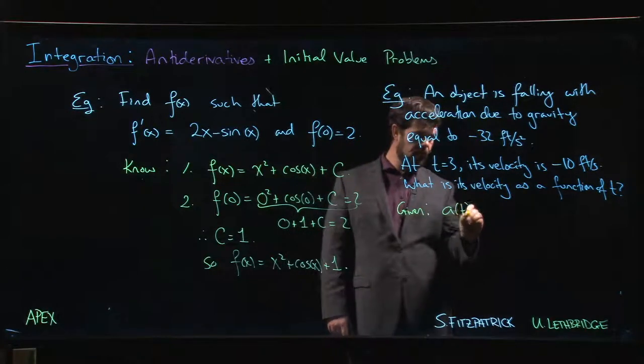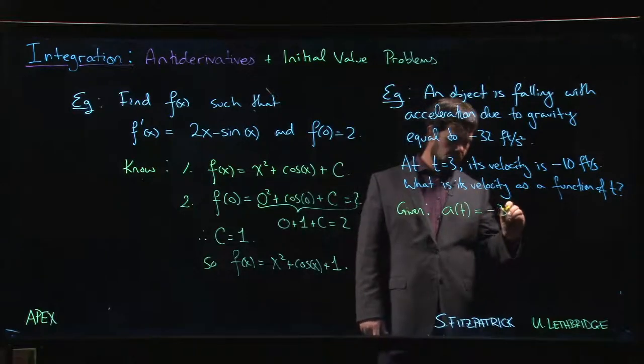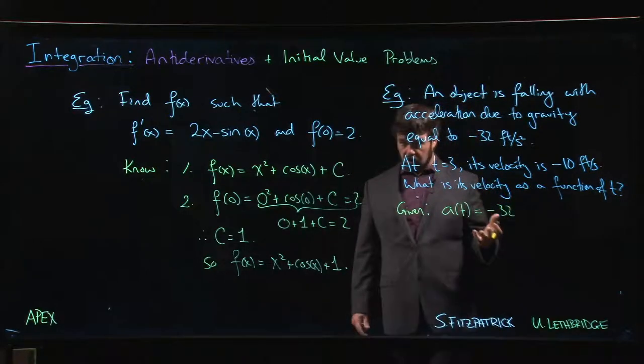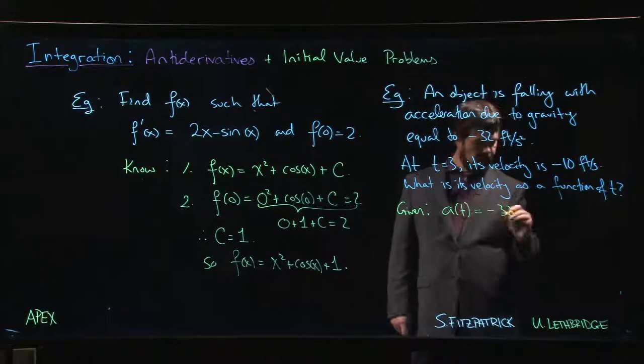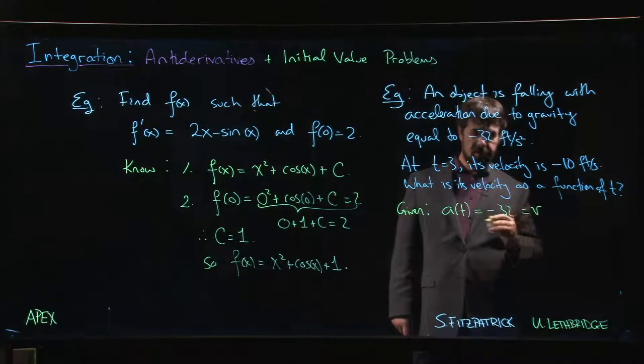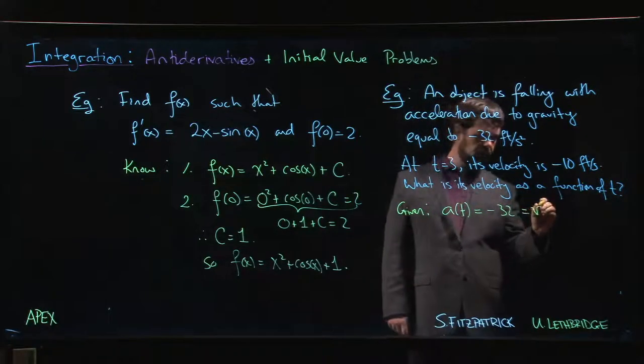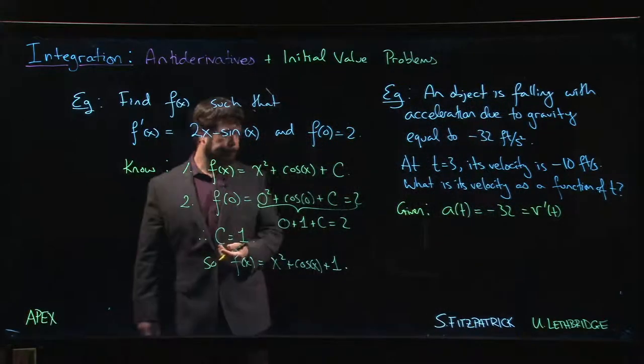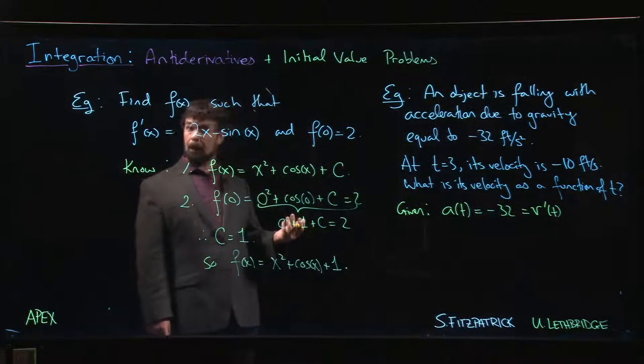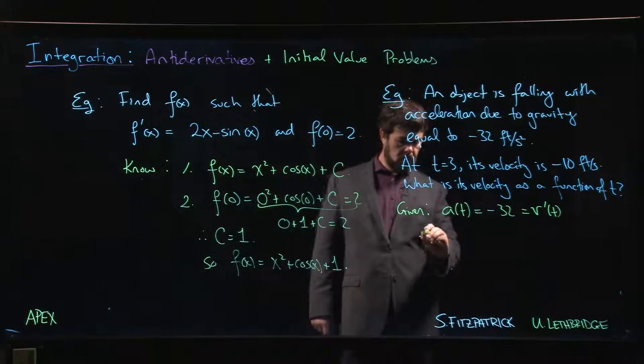We're given that the acceleration, which is a function of t, is negative 32. It's a constant function. We also know that acceleration is defined as the derivative of velocity with respect to time, so we know v prime.